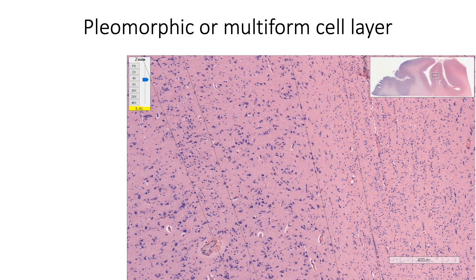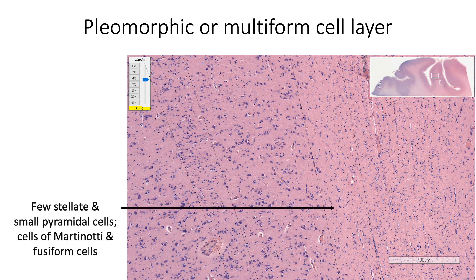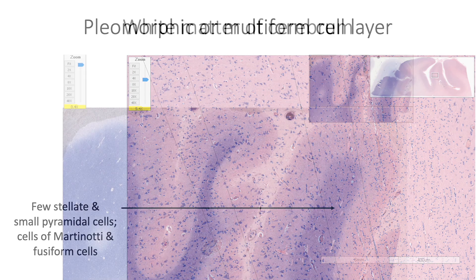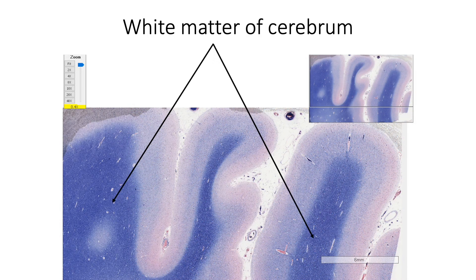The sixth layer, or the pleomorphic layer, also known as the multiform cell layer, consists of multiple types of cells, including a few stellate cells, small pyramidal cells, cells of Martinotti, and fusiform cells. The white matter of the cerebrum consists of both corticofugal and corticopetal fibers. The afferent fibers predominantly end in layers 1, 4, and 6 of the cortex, with the maximum number of fibers terminating in layer 4.